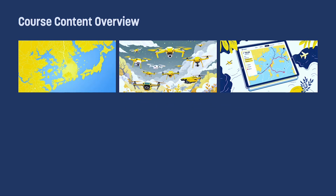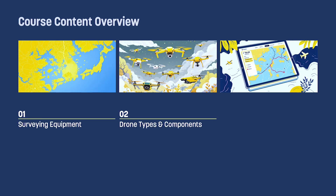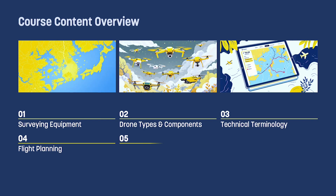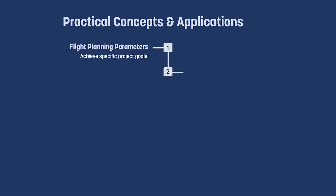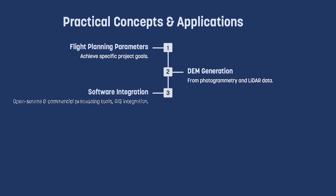This course aims to create awareness about various land surveying equipment, different types of drones and their advantages, components of a drone, technical terms used, flight planning of a drone, software used to process the drone data, flying regulations and some selected applications. As we progress, the course will also introduce participants with practical concepts in drone surveying such as flight planning parameters to achieve project goals and digital elevation model generation from photogrammetry and LiDAR. We will introduce various open source and commercial software to process the datasets as well as how to integrate drone-based datasets in GIS.